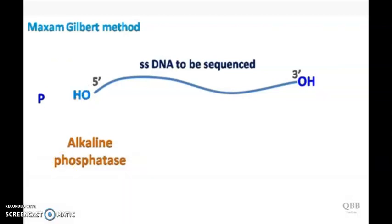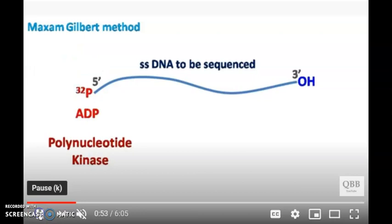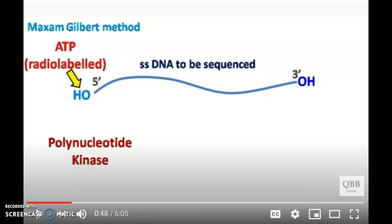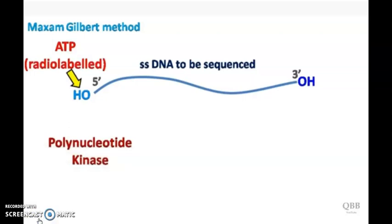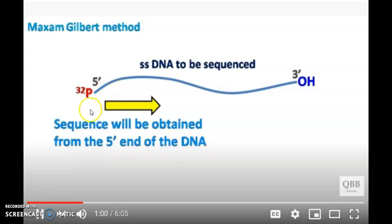So the 5' end of the DNA is removed by alkaline phosphatase. Simultaneously, the kinase adds P32 to the 5' end of it. And this allows the sequence to be obtained from the 5' end of the DNA.